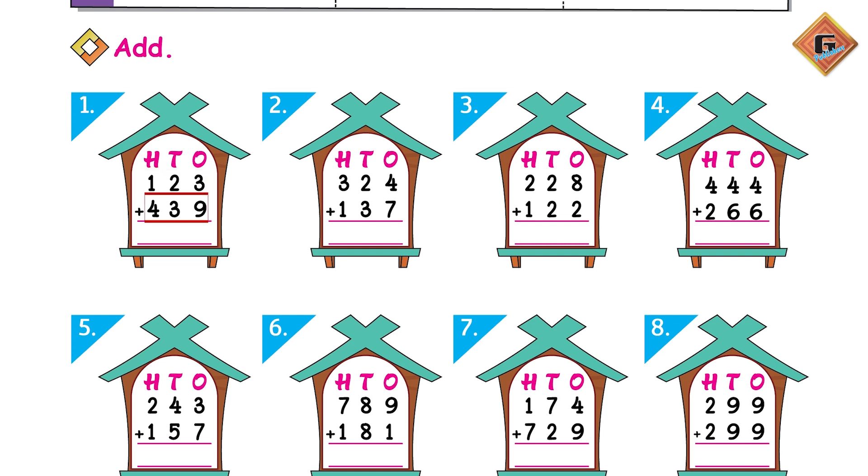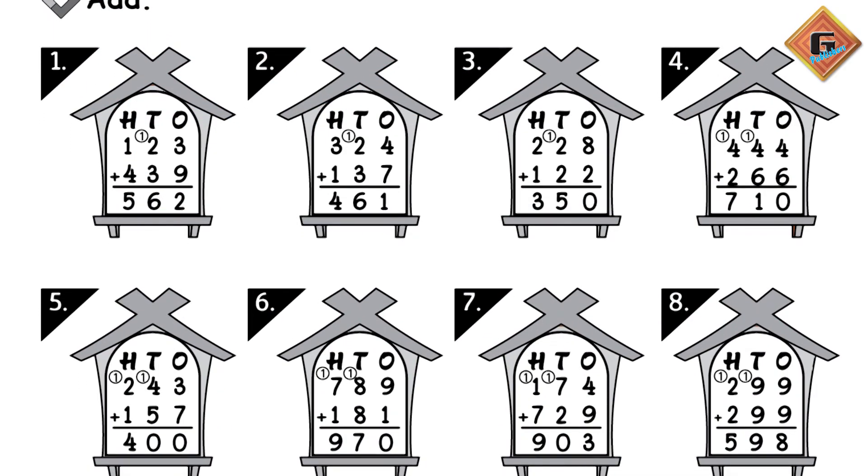Sab se pehle aap kise add karenge? Very good, ones ko. 9 plus 3 is equal to 12. To humh kya likhenge? Ones mein 2 and what are we going to carry? 1. Abh hum tens ko karenge add: 3 plus 2 plus 1, how many are these? Very good, 6. And hundreds karenge: there are 1 plus 4, very good, it is going to be 5. The answer is 562.